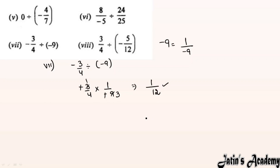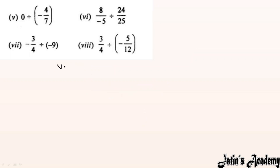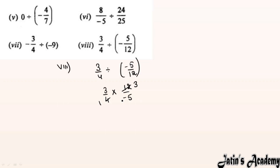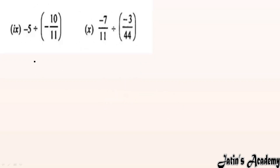Next we are having the 8th part. We are given 3/4 ÷ (minus 5/12). Divide converts to multiply, next term takes reciprocal. After cancellation the answer is 9/minus 5.